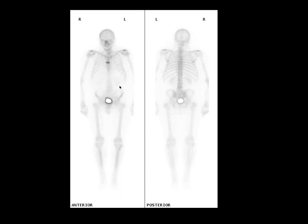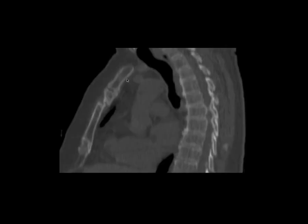Back to the sternum — the normal uptake was a small area of activity at the manubriosternal articulation, not always seen. But this appearance is rather different: a transverse band of activity. This transverse band appearance is often seen in the sternum or spine where there's a fracture. This patient actually had an ununited fracture of the sternum causing this appearance.